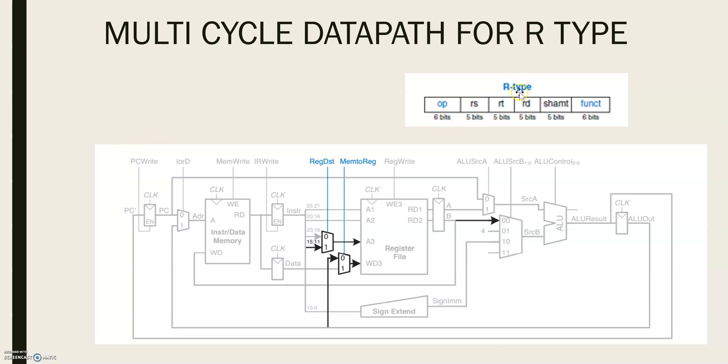For an R-Type instruction, the instruction is fetched and the two source registers are read from the register file. ALU-SRCB, the 2-bit control signal for SRCB multiplexer, is used to choose register B as the second source register for ALU. ALU then performs the appropriate operation and stores the result in ALU-OUT.